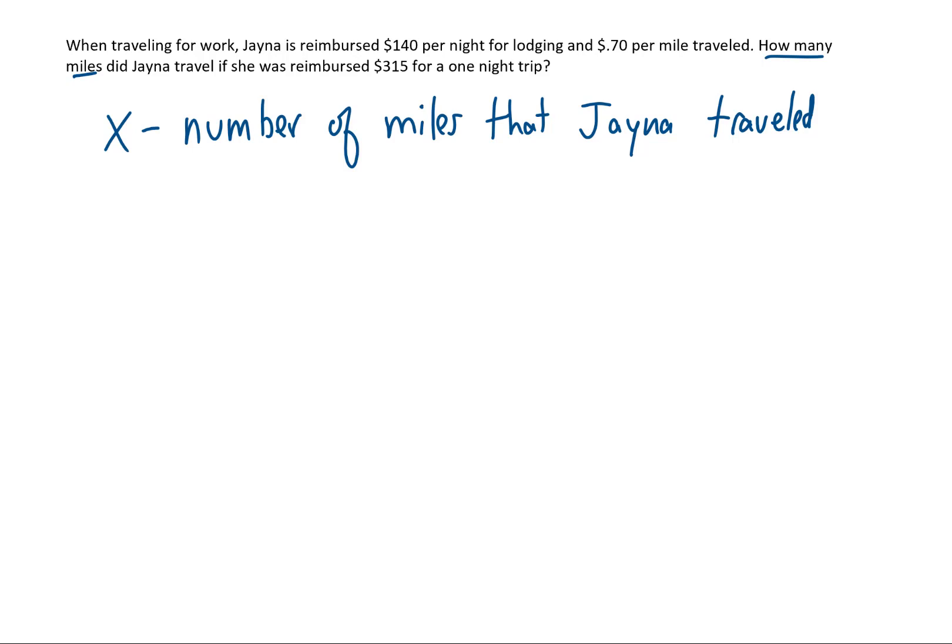Now that we've defined our variable, we can start to put an equation together. This says that Jaina was reimbursed $315 and that amount of money is made up of one night of reimbursement for $140 plus whatever money Jaina got for traveling, $0.70 per mile. So if Jaina traveled one mile, she gets $0.70. If Jaina traveled 10 miles, she gets $7. If Jaina travels 100 miles, she gets $70. The way I'm getting each of these numbers is I'm taking .7 or $0.70 and I'm multiplying it by how many miles Jaina traveled. Well, how many miles did Jaina travel? We don't know yet. That's our unknown that we called x. So, so far this equation says that Jaina was reimbursed $140 for one night of lodging plus she was reimbursed $0.70 per mile. And all of that reimbursement needs to add up to $315.